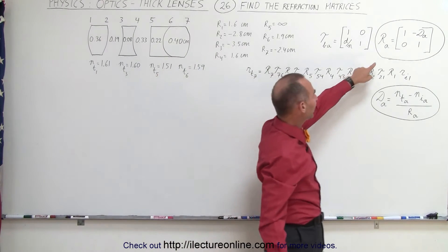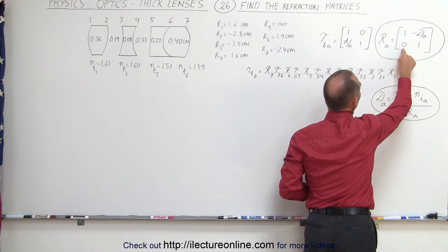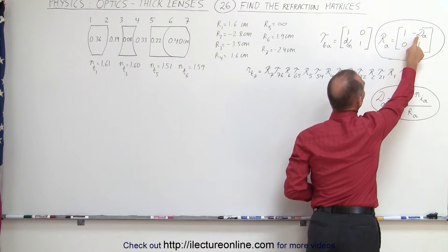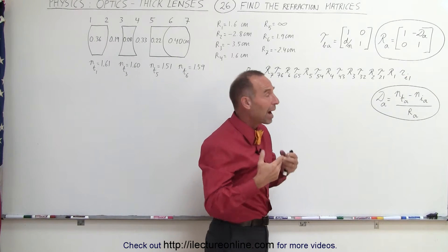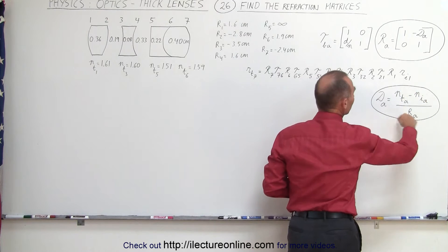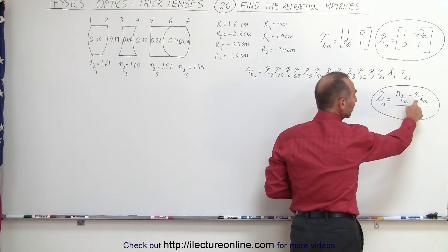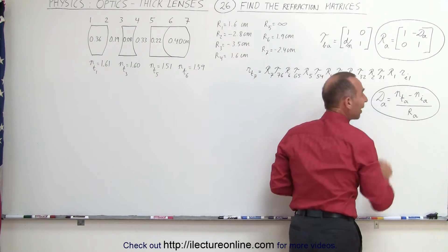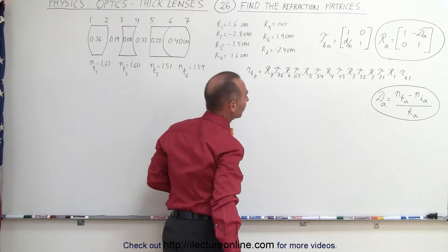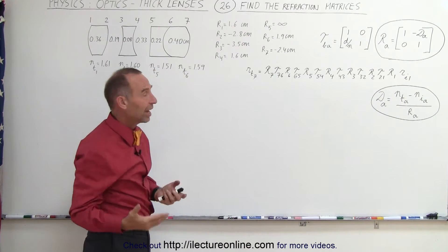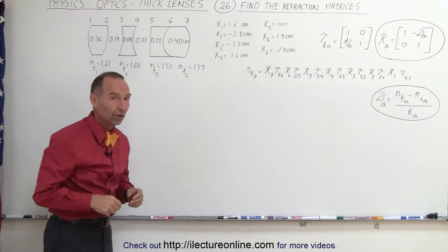The general equation of finding the refracting matrix is fairly straightforward. Notice it's a two by two matrix. We have ones across the diagonal, a zero in this element, and on that element we have minus d of that particular boundary. The a represents the number of the boundary, and the d represents the power of that boundary, which is defined by this equation. It is the difference of the index of refractions across the boundary. This would be the ones on the transfer side. This is the index of refraction on the incident side of the boundary divided by the radius of curvature of the boundary.